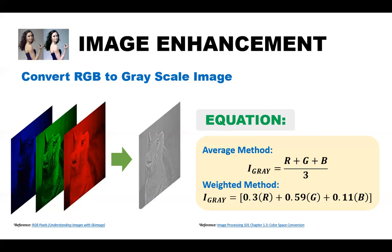Before we proceed with an example, let's have first the two methods to convert an RGB image to a grayscale image. These are the average method and the weighted method. Theoretically, the formula for the average method is 100% correct: i_GRAY = (R + G + B) / 3.